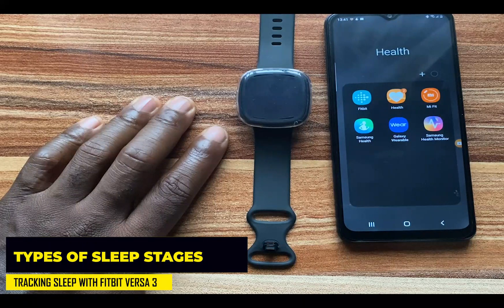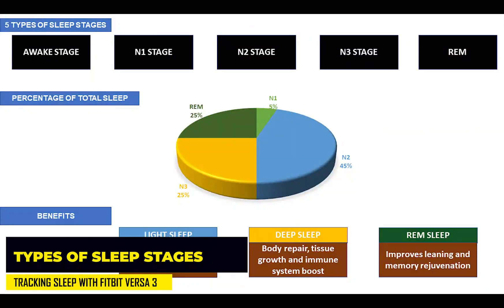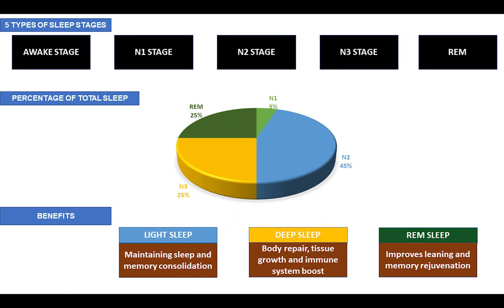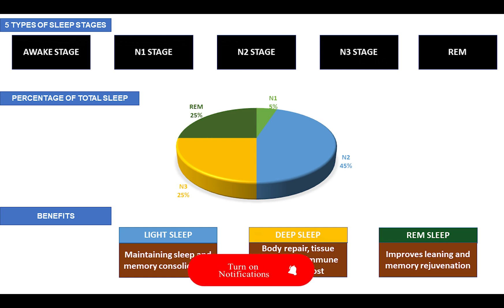The first stage is the wake stage — this is when we are still awake and just winding down to sleep. According to EEG recordings of the brain, this stage is characterized by beta and alpha waves. Beta waves dominate when our eyes are still open, while alpha waves dominate when we close our eyes.